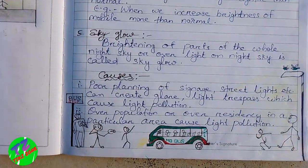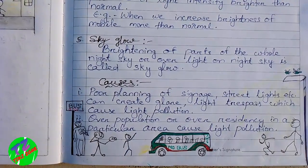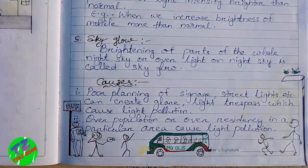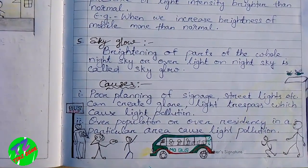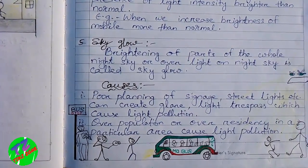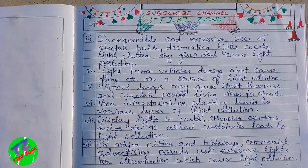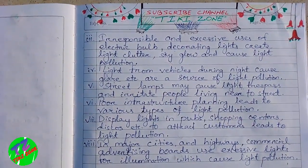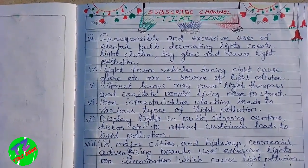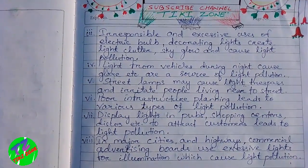Now let us discuss the causes of light pollution. Poor planning of signage and street lights can create glare and light trespass, which cause light pollution. Overpopulation or over-residency in a particular area also causes light pollution. Irresponsible and excessive use of electric decorative lights creates light clutter, sky glow, and causes light pollution. Light from vehicles during the night causes glare and is a source of light pollution.